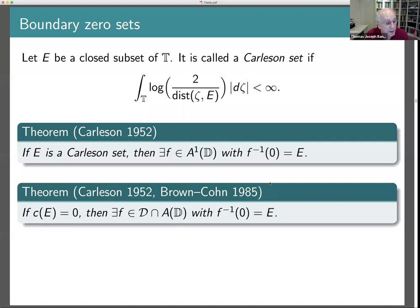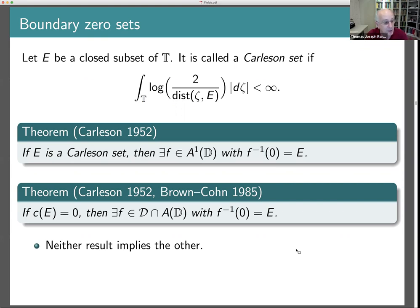There is a second theorem giving another source of zero sets, again due to Carleson and later improved by Brown and Cohn. If E is a closed subset of capacity zero, then you can find a function in the Dirichlet space, continuous up to the boundary, whose zero set is E. Neither of these two results implies the other. You can have Carleson sets of positive capacity — the Cantor middle-third set is an example — and you can have countable compact sets of capacity zero that are not Carleson sets.